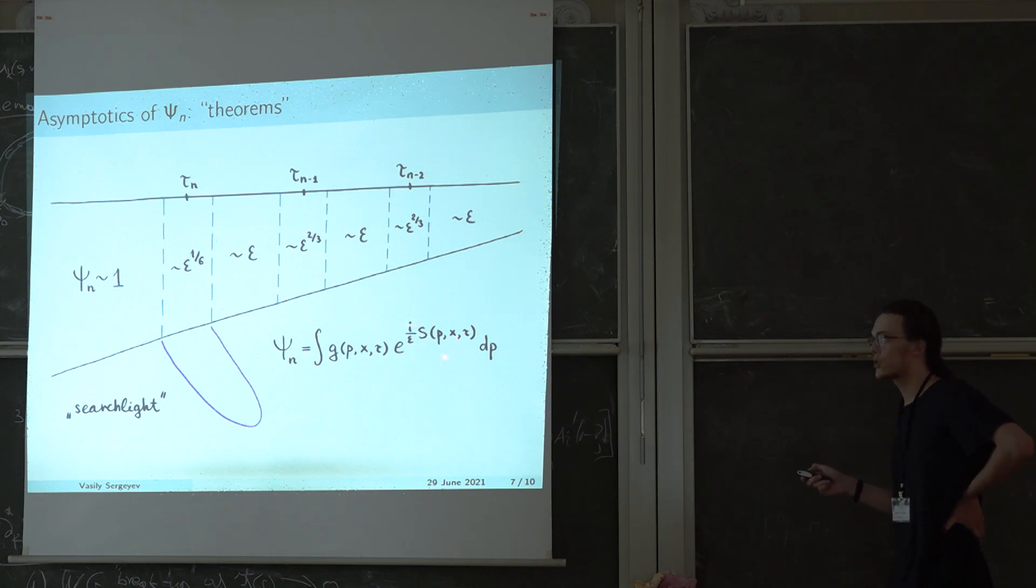By a suitable change of variable, we can get rid of the branch point and then study an integral with two nearby saddle points using classical methods developed for this case. Namely, the theorem of Chester, Friedman and Ursell and so on.